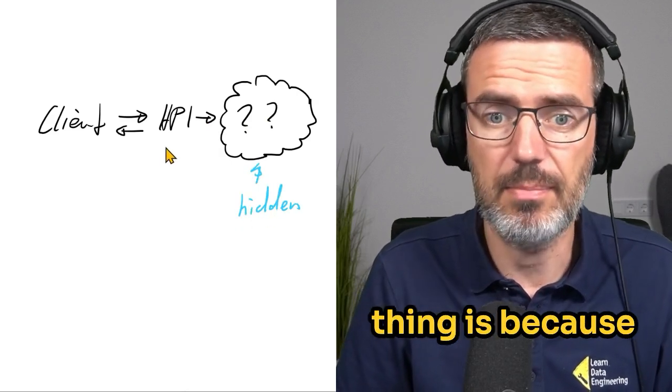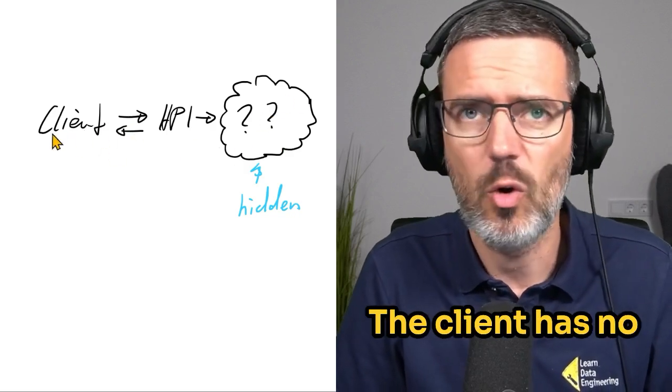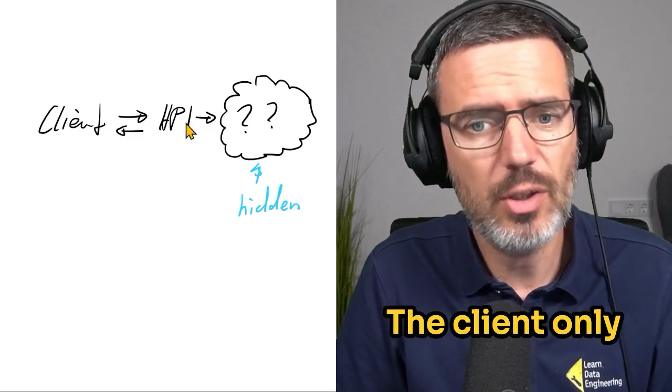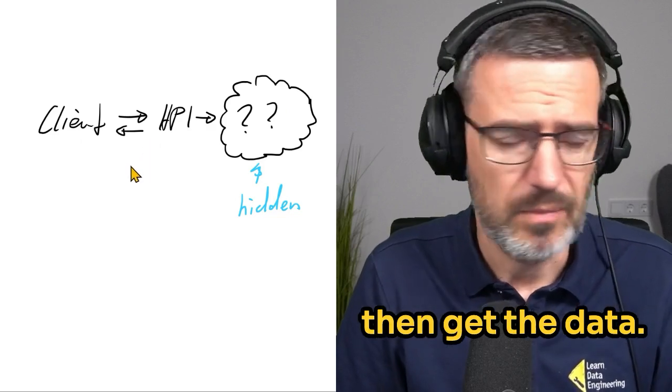Now, the good thing is because this is hidden, you can build here whatever you want. The client has no interest in this. The client only knows how to talk to the API and then get the data.